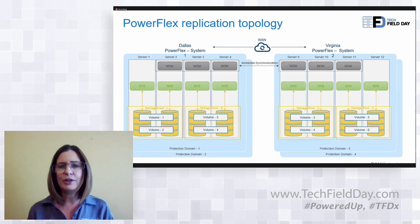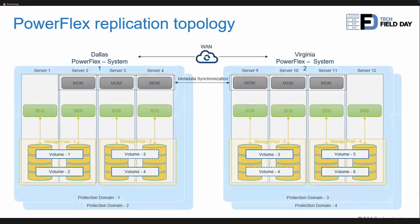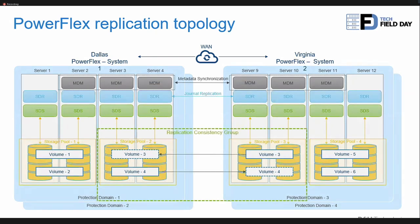What are we replicating? We replicate volumes or sets of volumes. We define a replication consistency group. Applications sometimes have multiple datasets that need to stay consistent, so volumes assigned to a consistency group can include one or multiple volumes, and the system ensures that data is replicated and stays consistent. With the first release, we replicate one-to-one or bi-directionally. Many-to-many or many-to-one is not supported yet — that will come in a future release.